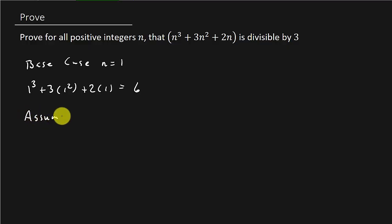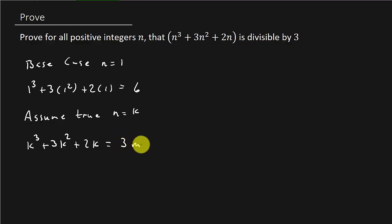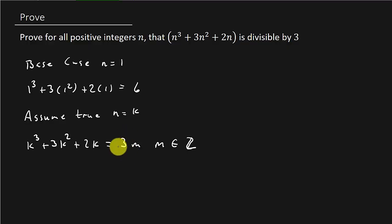We're going to assume it's true for n equals k. So in other words, that's going to be k cubed plus 3k squared plus 2k is equal to 3m, where m is an integer. So if you have some integer, whatever the integer is, it's multiplied by 3, so it's going to be divisible by 3. And this is how we would write it — that this is equal to some multiple of 3.